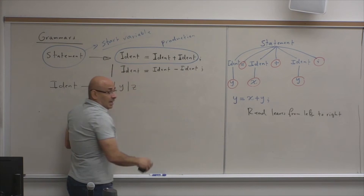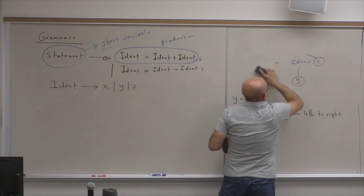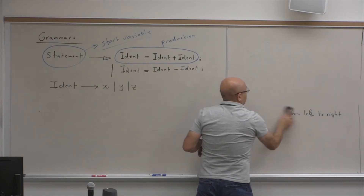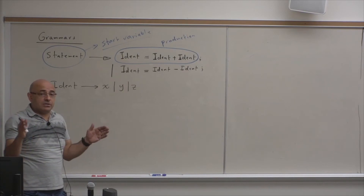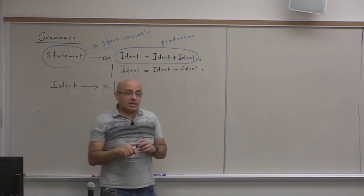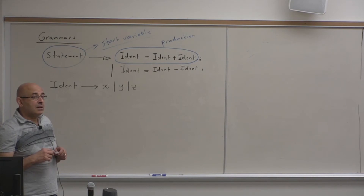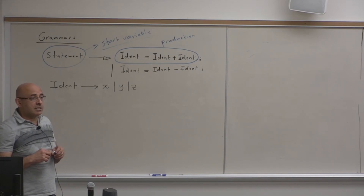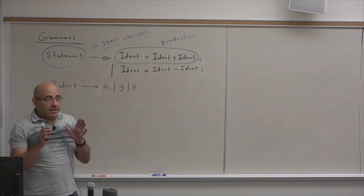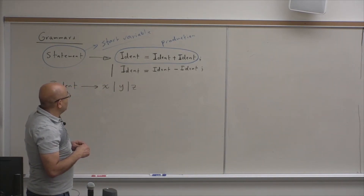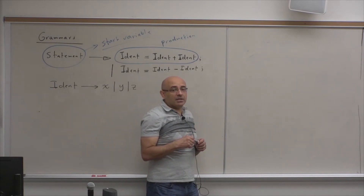Now, let's see how we can write a grammar for a language that we could not recognize using finite automata or regular expressions. By the way, regular expressions are generators — they generate languages. Finite automata are recognizers — they recognize languages. Do you think a grammar is a generator or a recognizer? It's a generator; it's more like a regular expression. But there are mechanisms for developing recognizers for grammars, and parsing is about developing those recognizers.